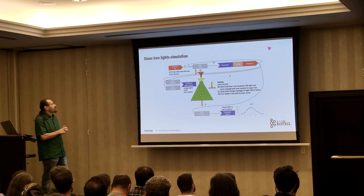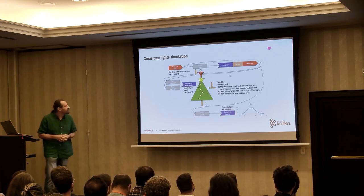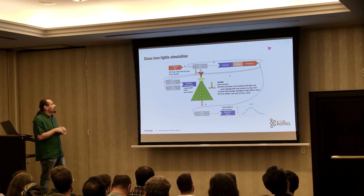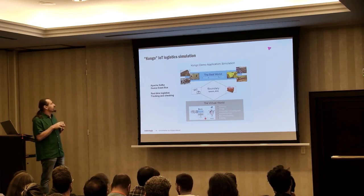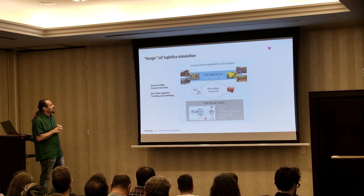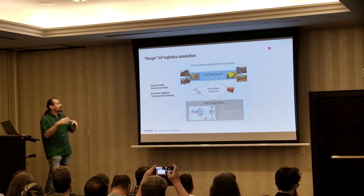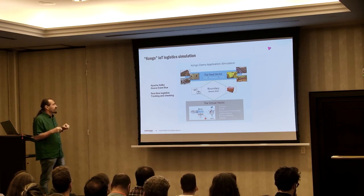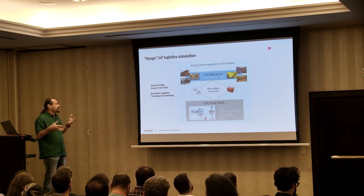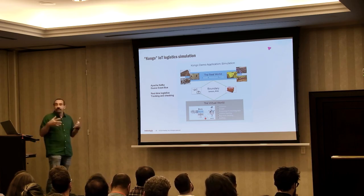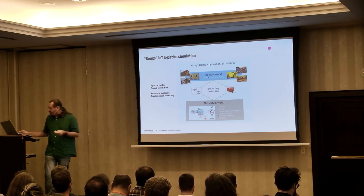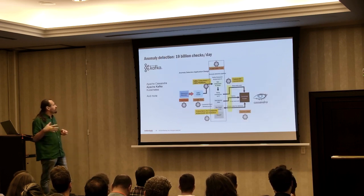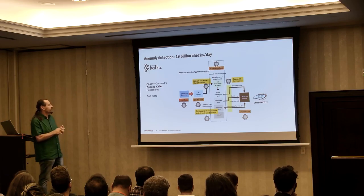My use cases: I started by building a toy Christmas tree light simulation. Then the first real application was a simulation of a logistics delivery system — goods being moved around by trucks to warehouses — with real-time checking of rules about what was safe to transport together and environmental factors about storing different goods. The anomaly detection system also included Kafka as one of the main technologies.